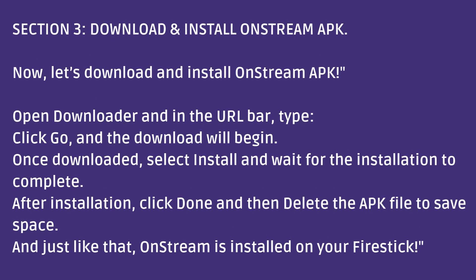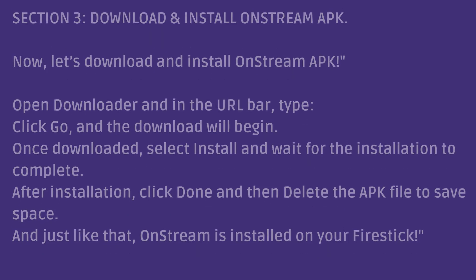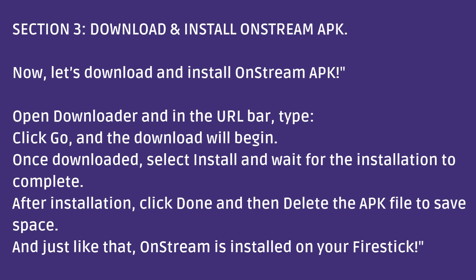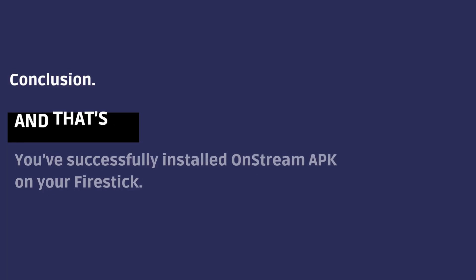Section 3: Download and Install OnStream APK. Now let's download and install OnStream APK. Open Downloader and in the URL bar, type the URL. Click Go and the download will begin. Once downloaded, select Install and wait for the installation to complete. After installation, click Done and then delete the APK file to save space. And just like that, OnStream is installed on your Fire Stick.